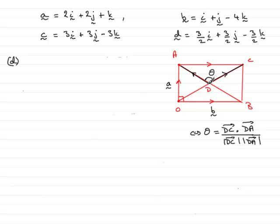If the vector DA was reversed — in other words it was A to D — you'd actually be finding this exterior angle here. The same would apply if this vector was reversed and C to D was in that direction; you'd be finding a different angle. So it's dead important that when you find theta, you have your vectors coming away from the angle.